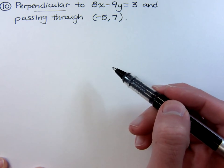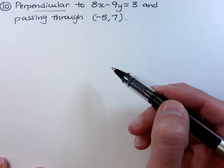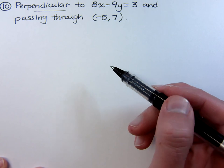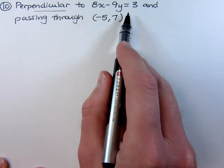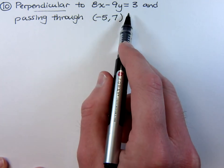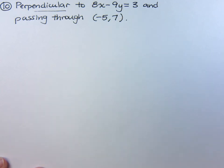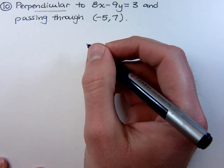Remember, to be perpendicular, the slopes are negative reciprocals of each other. So the way we can take care of that and stay in the standard form is to just switch the coefficients and change the sign of one of them.